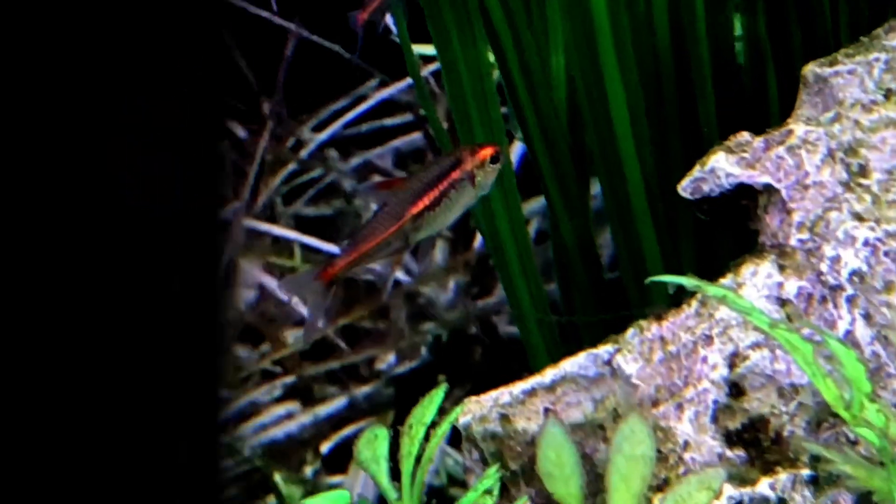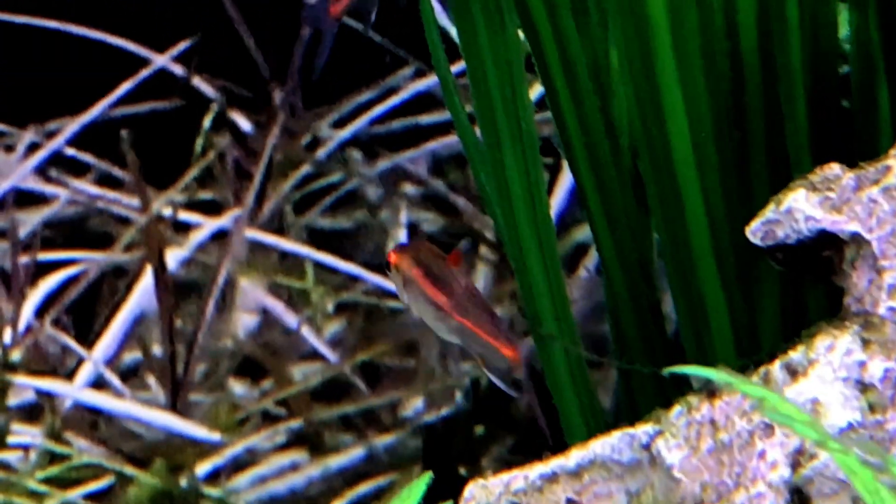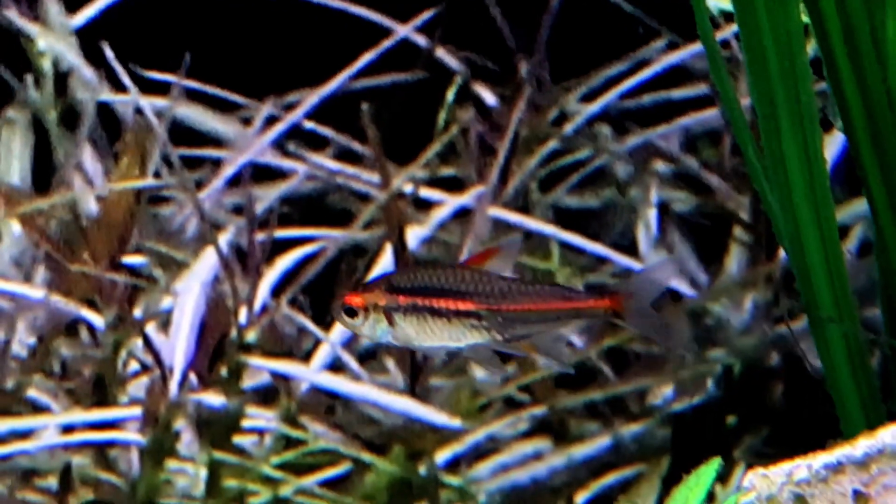G is for Glow Light Tetra. H is for Hermit Crab.